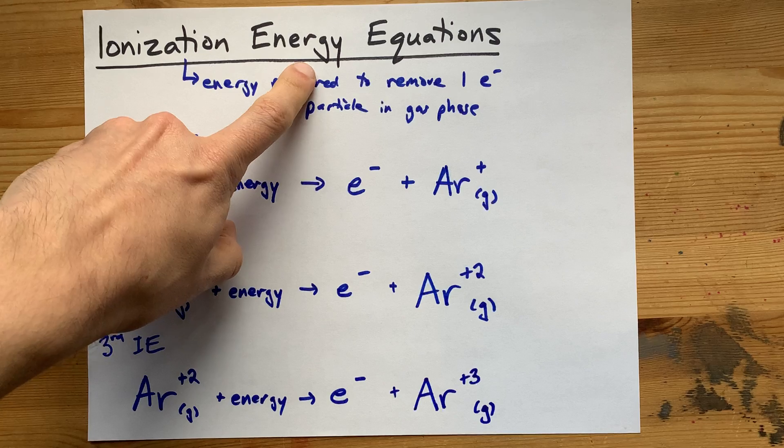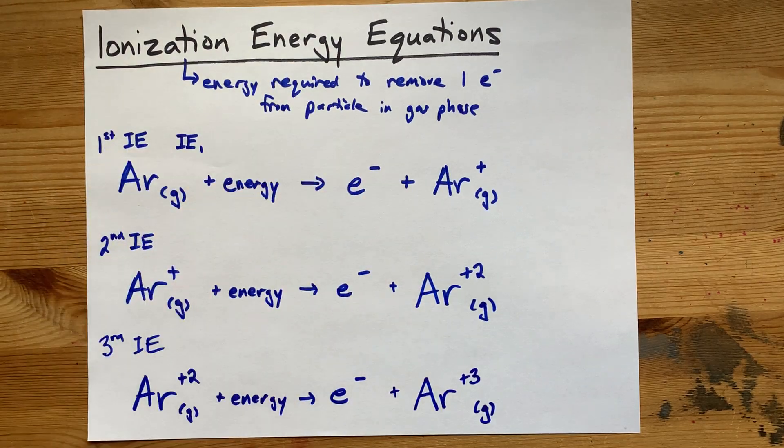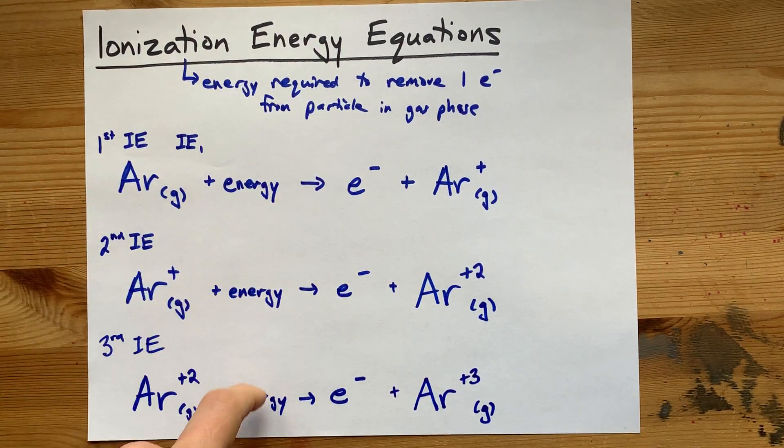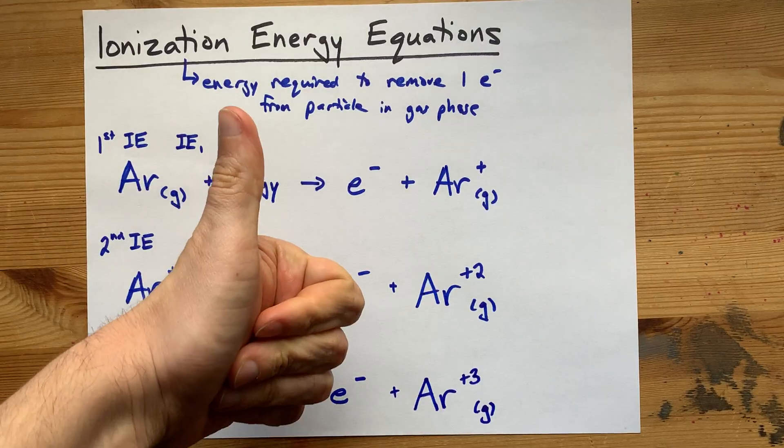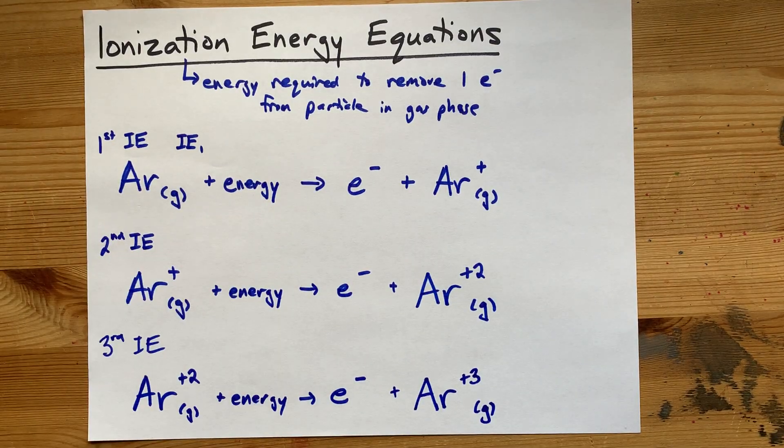That's all there is to it. Ionization energy is plucking electrons out. You have to put energy in to make it happen. Thanks for being with me. Best of luck.